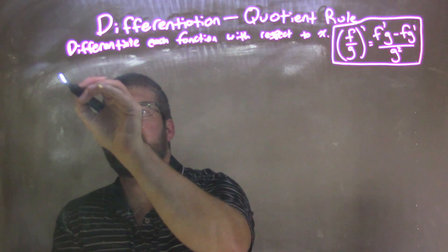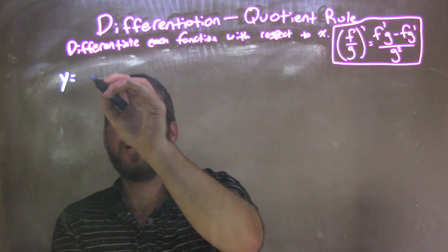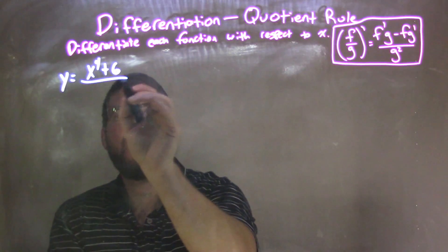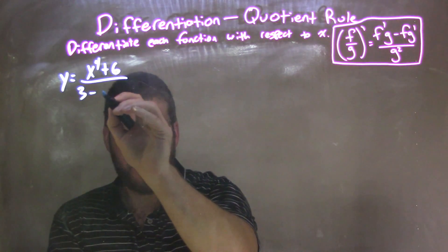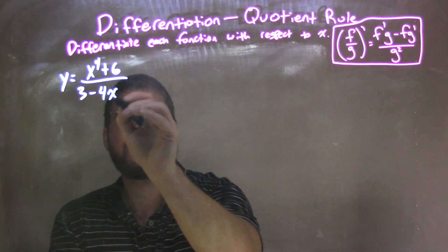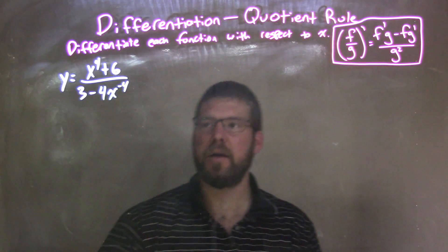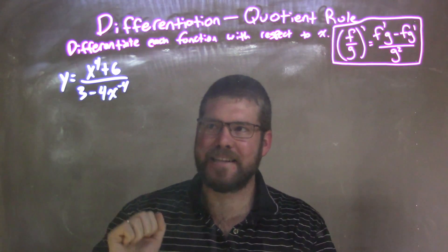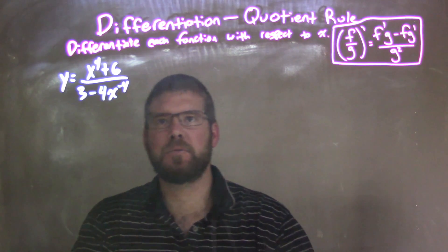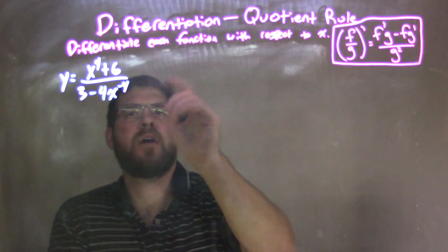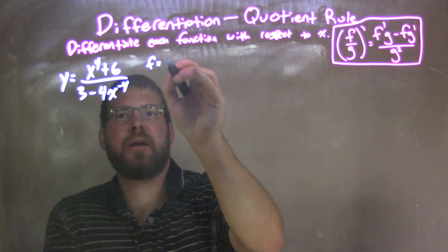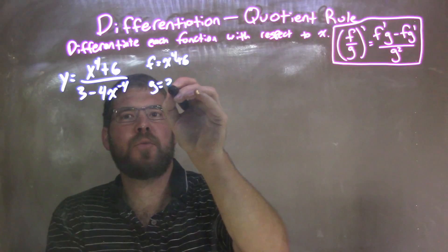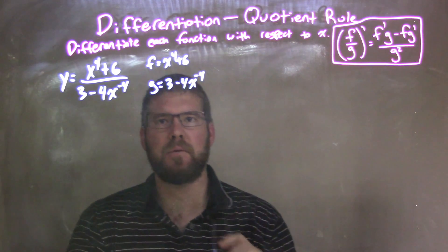So if I was given this function: y equals x to the 4th plus 6, over 3 minus 4x to the negative 4th power. That negative 4th power should give us a little pause — this is going to be a little more difficult than a normal quotient rule. My numerator, I'm labeling f to be x to the 4th plus 6. My denominator, g, to be 3 minus 4x to the negative 4th power.